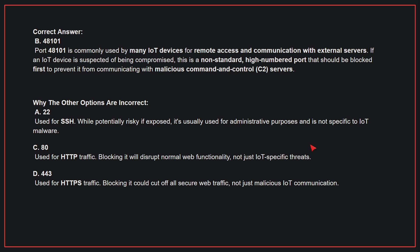Why the other options are incorrect: A, port 22 — this is used for SSH; while potentially risky if exposed, it's usually used for administrative purposes and is not specific to IoT malware. C, port 80 — this is used for HTTP traffic; blocking it will disrupt normal web functionality, not just IoT-specific threats. D, port 443 — this is used for HTTPS traffic; blocking it could cut off all secure web traffic, not just malicious IoT communication.